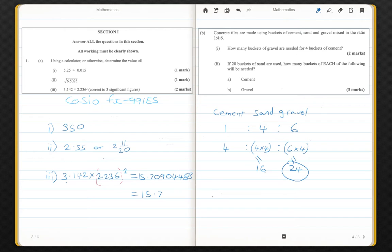Alright, now for part 2. For part 2, the question says, If you have 20 buckets of sand, how many buckets of each of the following will be needed? So we're starting with sand. We have 20 buckets of sand and we want to know the other amounts. So starting with 4 to get to 20, you would have had to multiply by 5.